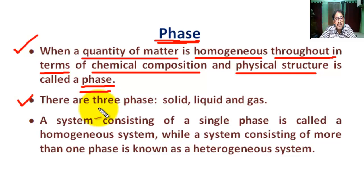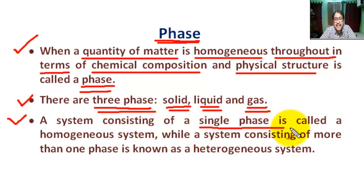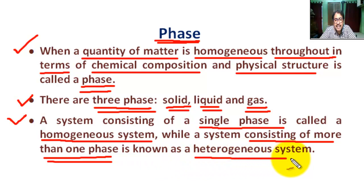There are three phases: solid, liquid, and gas. A system consisting of a single phase is called a homogeneous system, while a system consisting of more than one phase is known as a heterogeneous system.